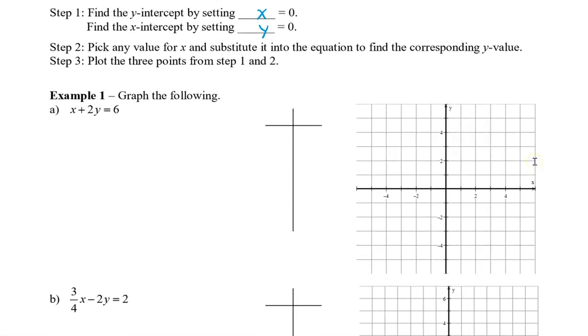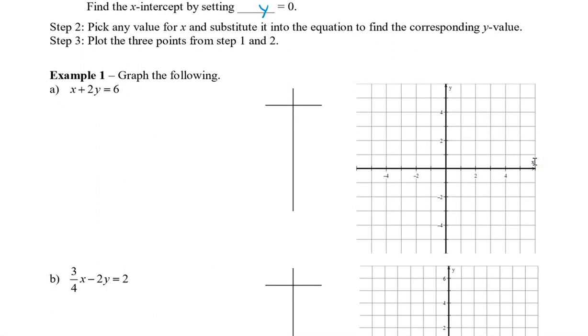So, here we have x plus 2y equals 6. Alright, so let's begin with finding our y-intercept. So, if x equals 0, okay, so now we have 0 plus 2y equals 6. So, here we can see we divide both sides by 2. We can ignore the 0. So, y equals 3. So, our first point in our table is 0, 3.